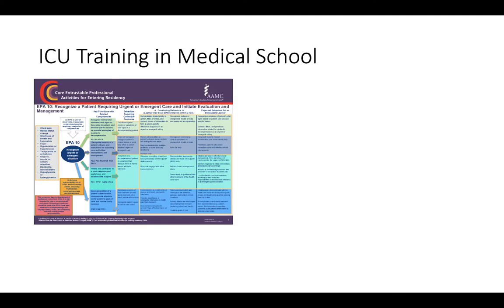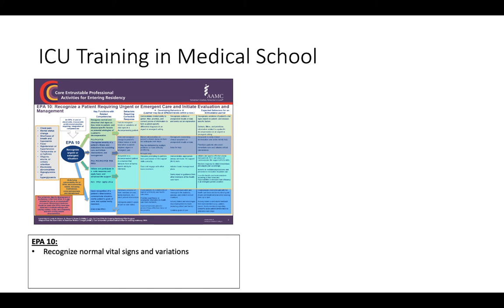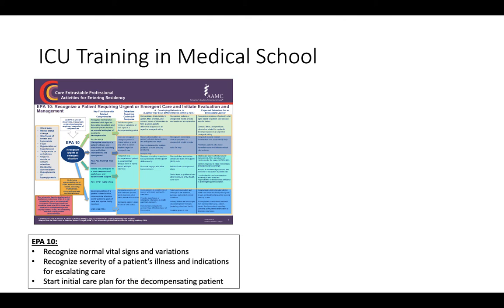EPA 10 states that medical school graduates must be able to recognize a patient requiring urgent or emergent care and initiate evaluation and management. Specifically, EPA 10 states that the graduate must be able to recognize normal vital signs and variations, recognize severity of a patient's illness and indications for escalating care, and start an initial care plan for the decompensating patient. Essentially, EPA 10 states that graduates should be familiar and able to perform the basics of critical care medicine.